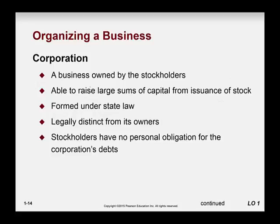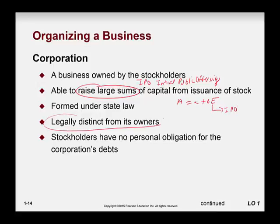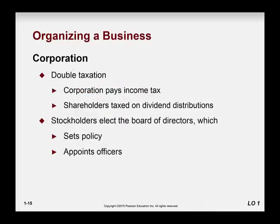A corporation is where you can raise large sums of money through an Initial Public Offering — another acronym. This ties into our accounting equation: assets equal liabilities plus owner's equity. The IPO is where you issue stock. The corporation is legally distinct from its owners, and you don't have a personal obligation. However, the problem with a corporation is double taxation — the corporation pays taxes, and then shareholders pay taxes on dividends, which is one of the biggest negatives of forming a corporation.